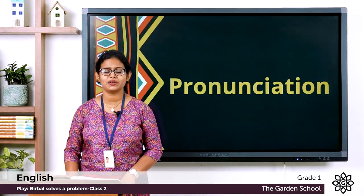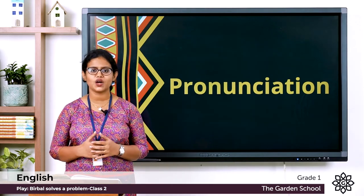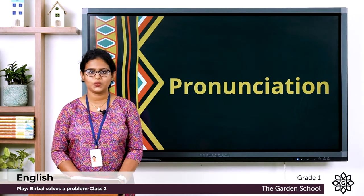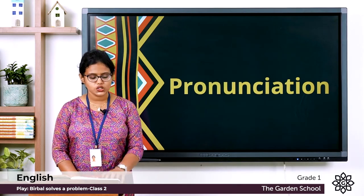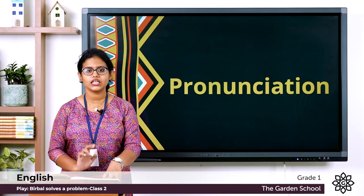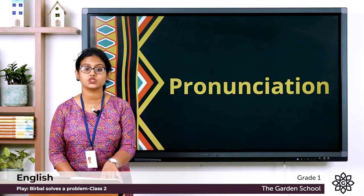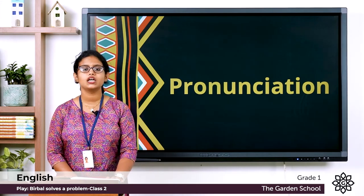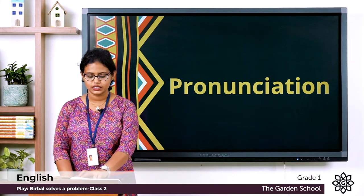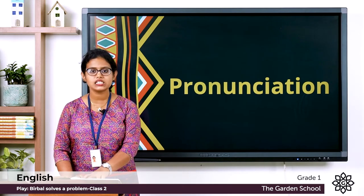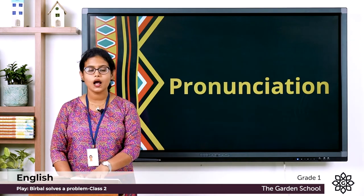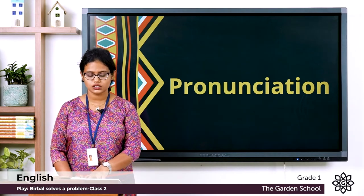Now take page number 96 in your textbook and let's discuss the pronunciation. Here you can see different words. We are going to read these words loudly — repeat these words along with me. First group: park, mark, dark, lark. Next group: pink, mink, sink, link. Then: musk, dusk, tusk, rusk.